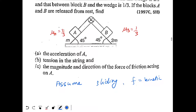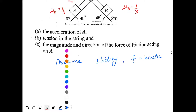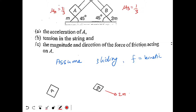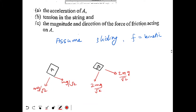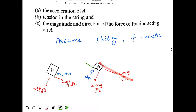Since block B is heavier, it should try to go down and block A should try to go up. Drawing the force components: the gravitational components along the incline are 2mg/√2 for block B and mg/√2 for block A. Normal forces are Na and Nb. Friction on block B acts upward (fB) and friction on block A acts downward (fA) — both are kinetic.